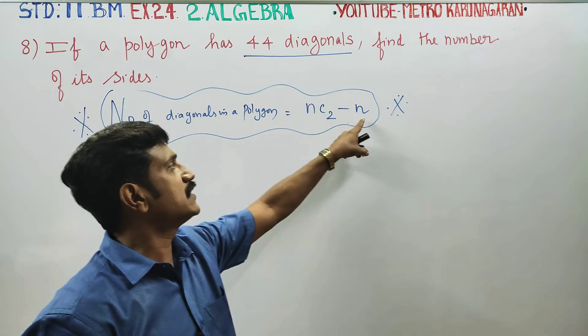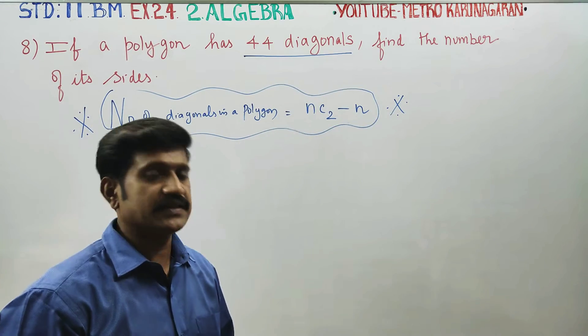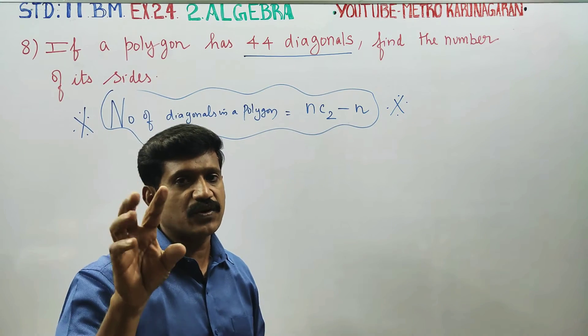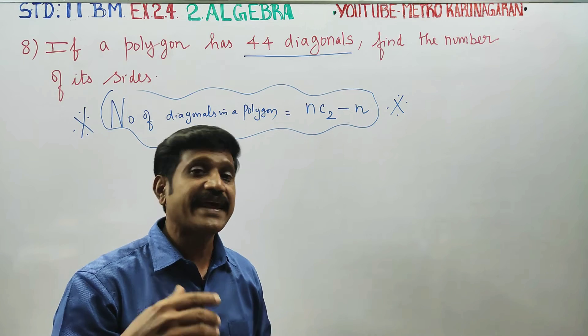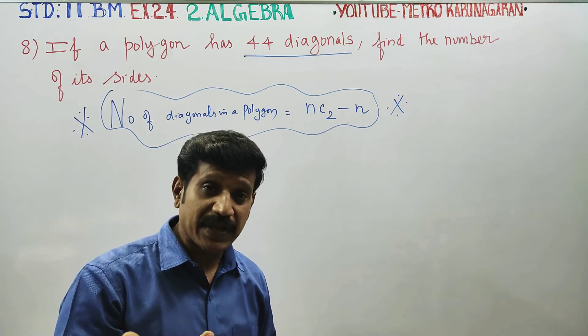The number of sides of a polygon: 4 sides is a quadrilateral, 5 is a pentagon, 6 is a hexagon, 7 is an octagon.